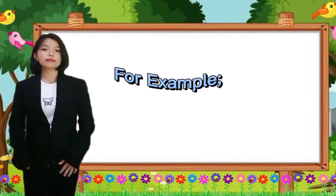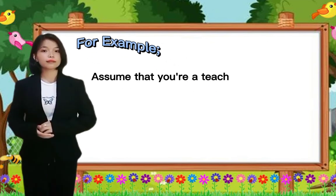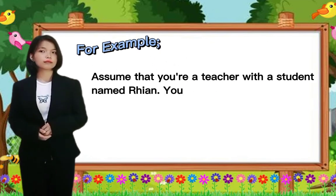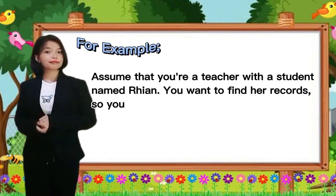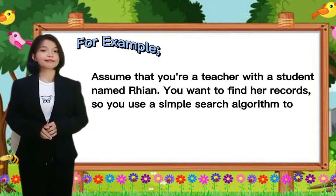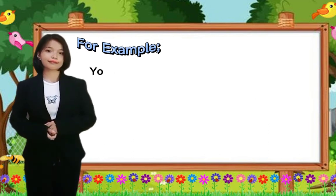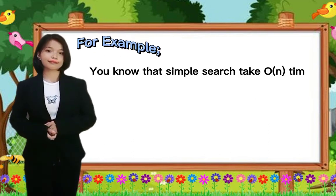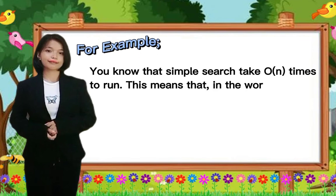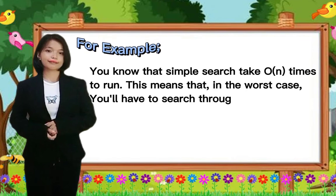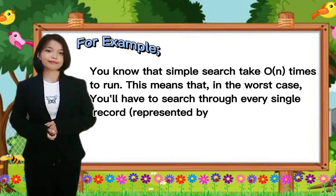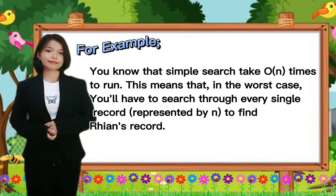For example, assume that you are a teacher with a student named Rian. You want to find her records, so you use a simple search algorithm to go through your school's database. You know that simple search takes big O of n times to run. This means that, in the worst case, you'll have to search through every single record represented by N to find Rian's record.